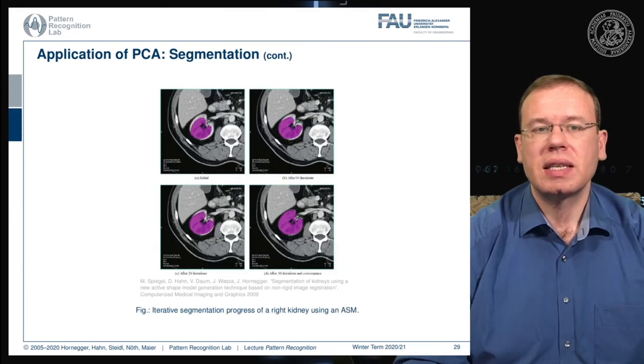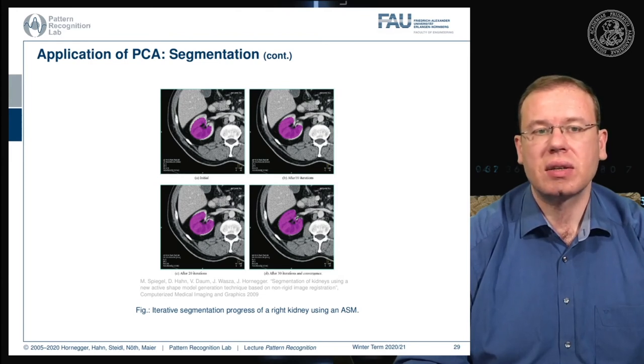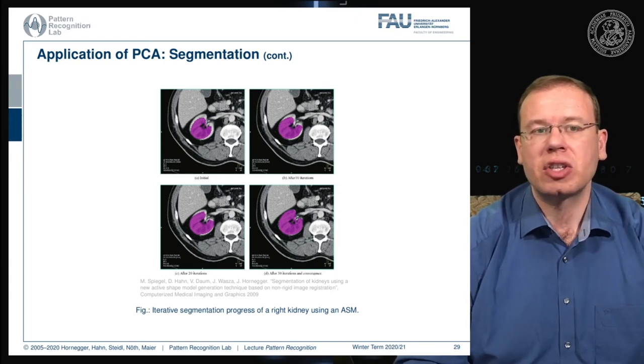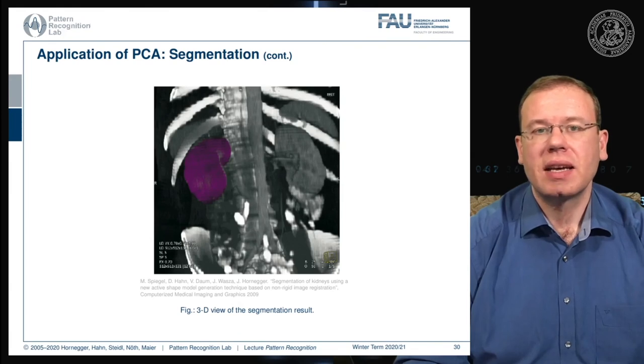Here you see the fitting process over iteration. We start with the mean shape that is fitted into the kidney. You see essentially a slice through the body, and we are indicating a slice through the mesh in purple. Over the iterations on the top right, bottom left, bottom right, you can see how the change in shape parameters allows us to approximate the observed shape in the CT volume much better. This yields a complete 3D segmentation of the kidney.